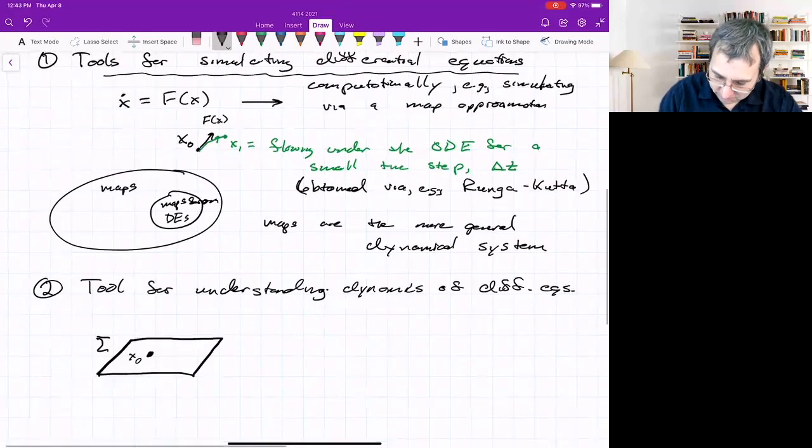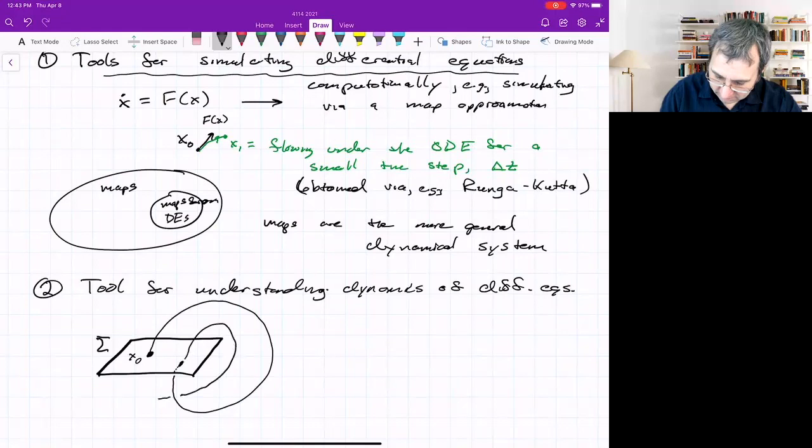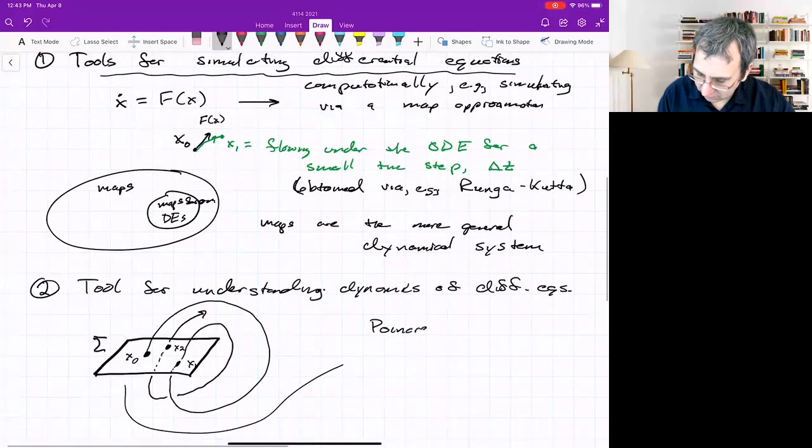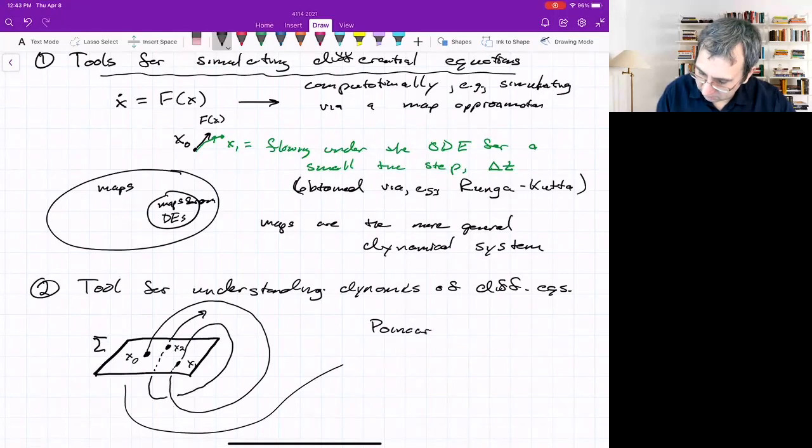and look at how initial conditions start on that slice. Sometimes the slice is called sigma. And the trajectories will go around and hit this surface again, at some other point, and maybe they'll go around and hit it again. If you look at what the dynamics are on that surface, it's a discrete map. Like this initial condition goes to this one, goes to this one. This is called a Poincaré. There's that name again. He was the first to use this idea. A Poincaré map on a Poincaré surface section.